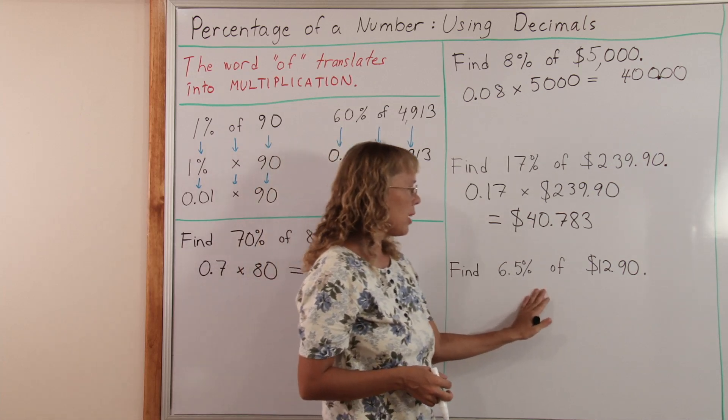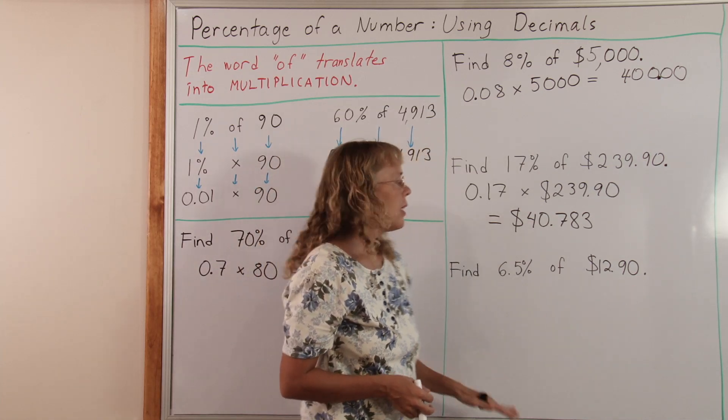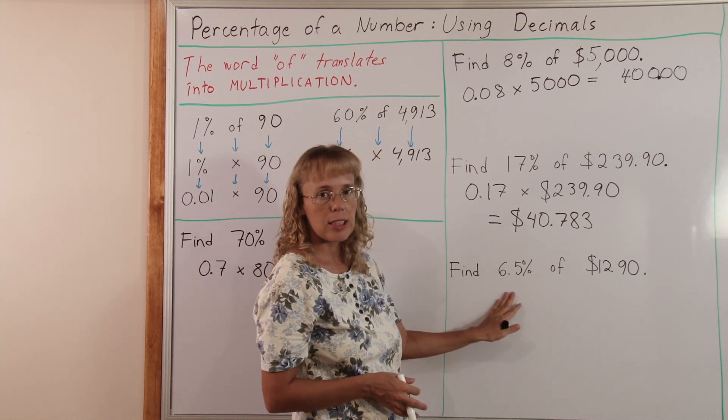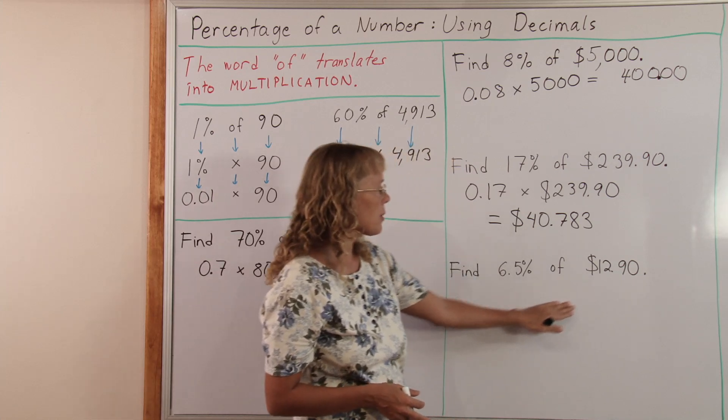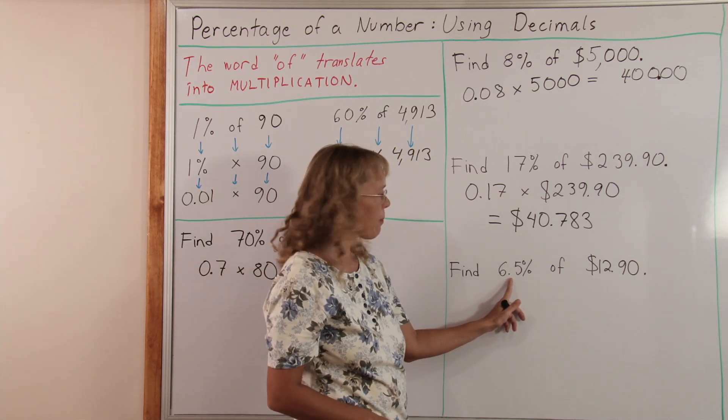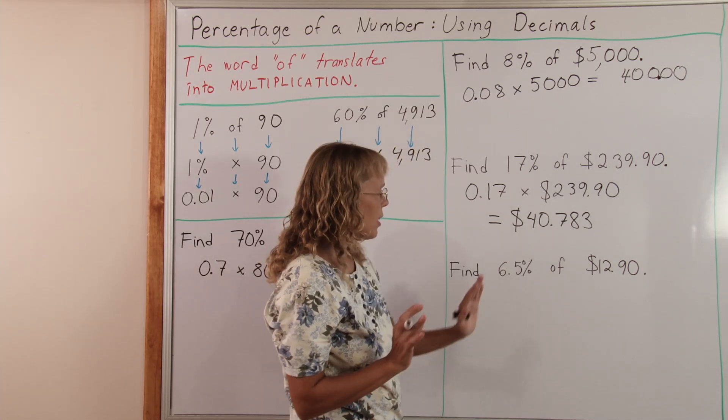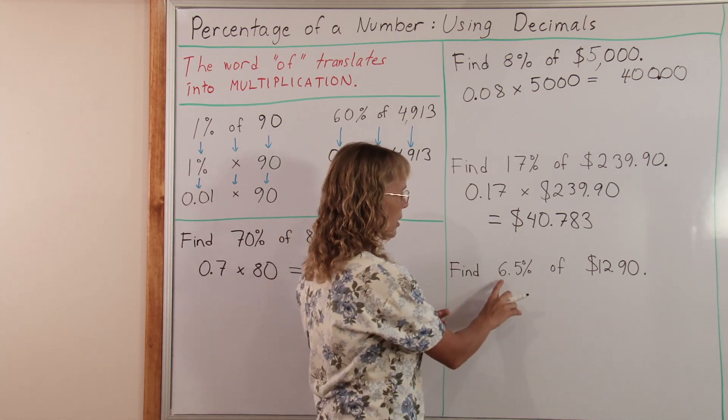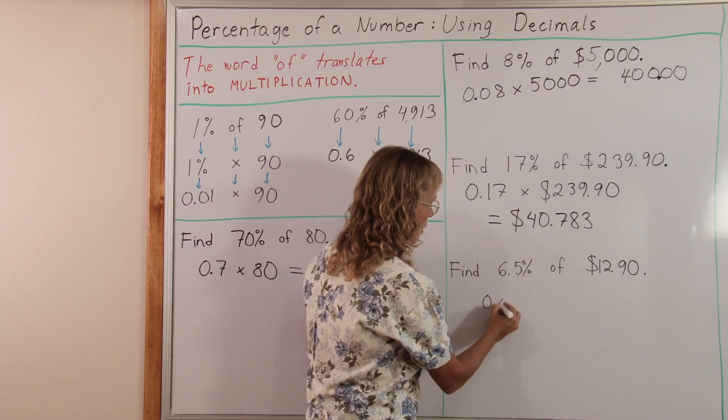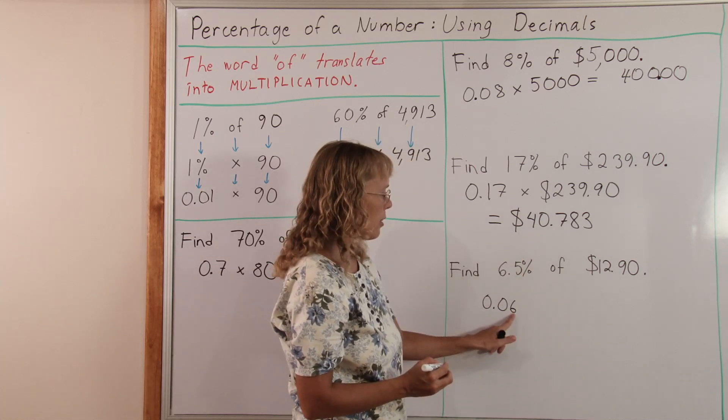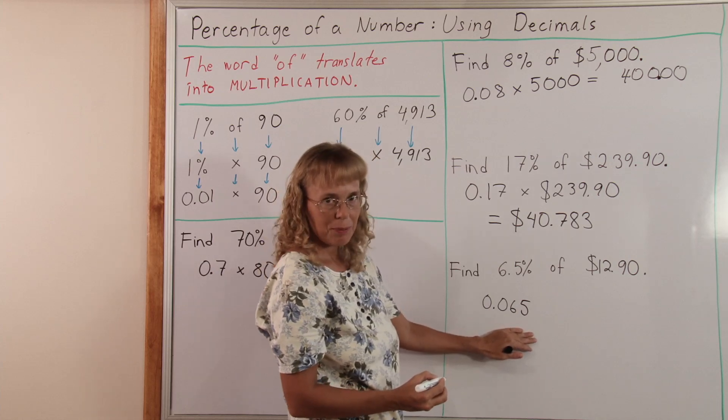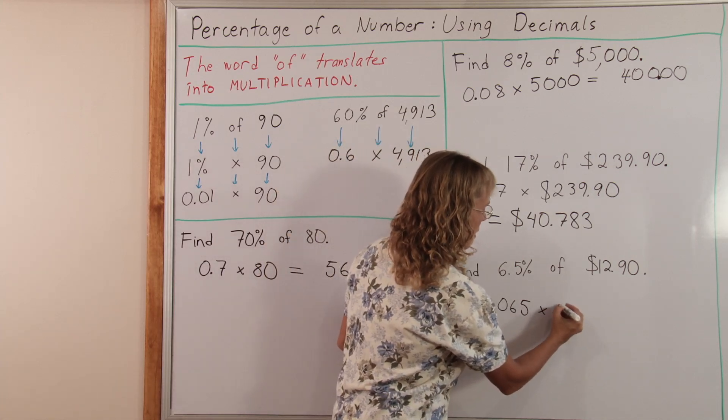Lastly, find 6.5% of $12.90. This might be needful to do if you have sales tax calculations. If the sales tax is 6.5% and the price of the item is this. First we change this to a decimal. But now there's a decimal point in the percent. The way I do these things is that I first think of an easier situation. What if it was just 6%? If it was only 6% here, my decimal would be 0.06. Right? 6 hundredths. But there's this 5 here. So I just tag the 5 here too. And now I got my decimal. 0.065 times 12.90.